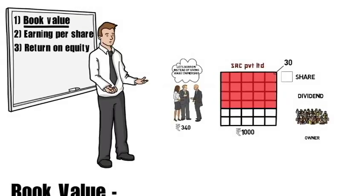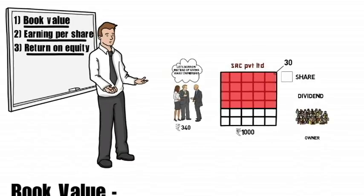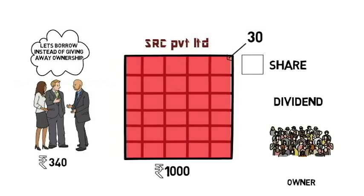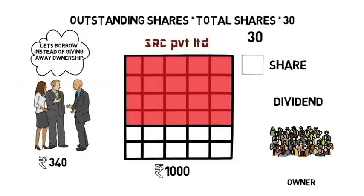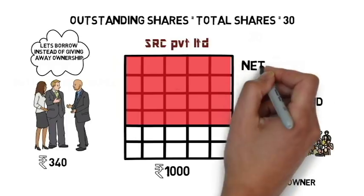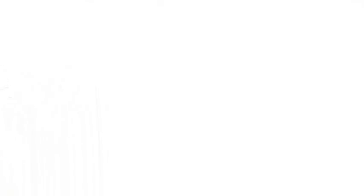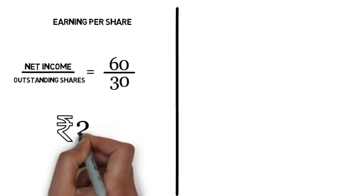To avoid misunderstanding, let us learn earning per share and return on equity together. For simplicity, let's make two assumptions: first, all shares are distributed amongst investors, so shares outstanding equals 30; second, the company earned a net profit of Rs.60 this year. Earning per share (EPS) is given as net income divided by outstanding shares — Rs.60 ÷ 30 — which gives an EPS of Rs.2. The EPS tells us how much profit the company earned for each outstanding share.